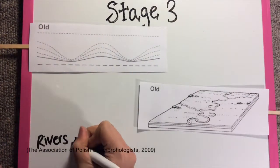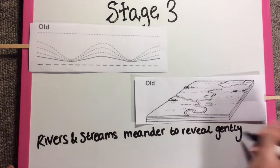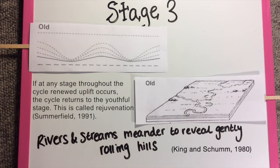Old age is reached when denudation is reduced and the landscape is wholly low relief. Eventually erosion ends when land reaches the base level and a pennant plane is formed.